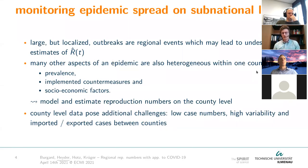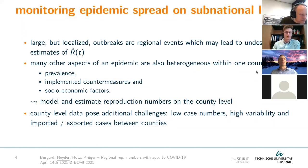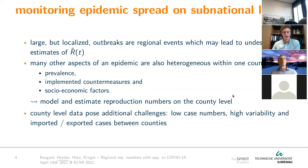To deal with this problem, we would like to have reproduction numbers not at the whole-country level but at a more local, county level. This also makes sense because many aspects of the epidemic differ among counties — there is a lot of heterogeneity. For example, different counties have different amounts of active cases, so prevalence differs; countermeasures vary by county; and there are socioeconomic factors and differences in spread between urban and rural areas. That's why I'd like to model reproduction numbers at the county level, with the hope that this also resolves the problem from the last slide.